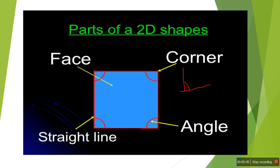The fourth part is the straight line, also called edges. We have already studied in class three that straight lines are called edges. In this shape there are four edges. So in 2D shapes there are four parts: face, corner, angle, and straight line or edge.